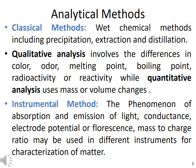Characterization of matter includes different methods such as classical methods and instrumental methods. Classical methods include precipitation, extraction, and distillation, used in laboratories as routine processes to characterize matter. For qualitative analysis, we use differences in color, odor, melting point, boiling point, and radioactivity. After identifying a compound in a given sample, quantitative analysis is performed to calculate the actual concentration of the targeted analyte.